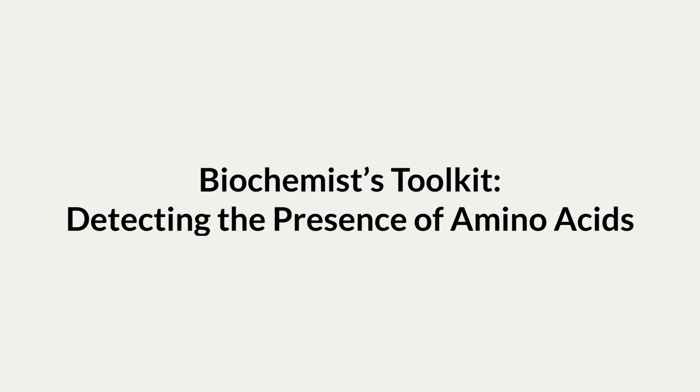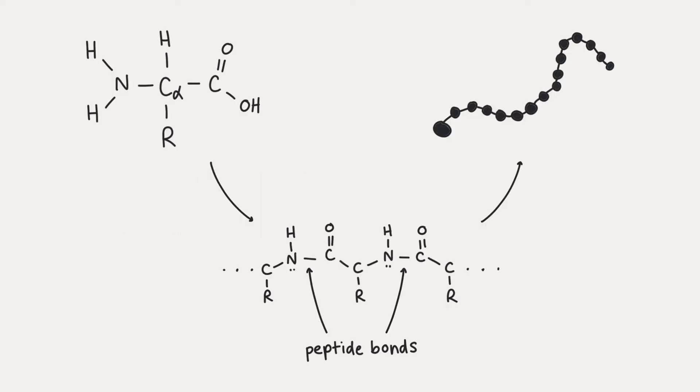When doing experiments with proteins, like when separating them to isolate a protein of interest, how do you detect if there's actually protein present in the solution you're looking at, and that it isn't just a liquid filled with miscellaneous stuff? Well, proteins are structures made up of several amino acids like this one, which are molecules that contain an amine group, a carboxylic acid group, and a side chain symbolized by the letter R.